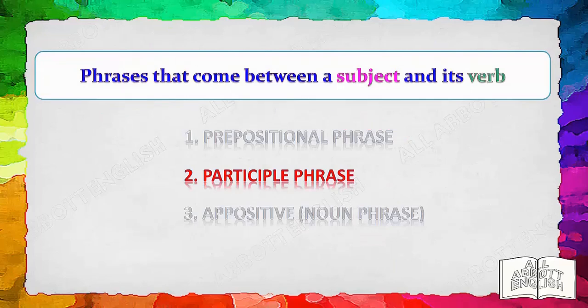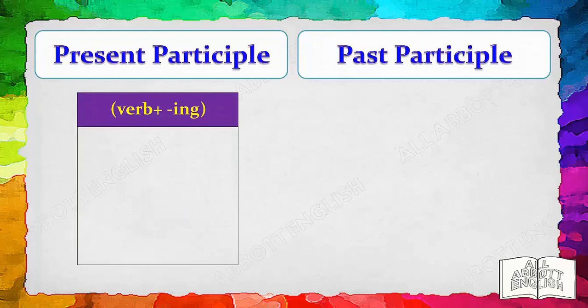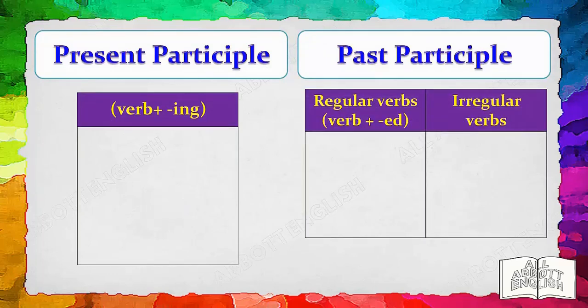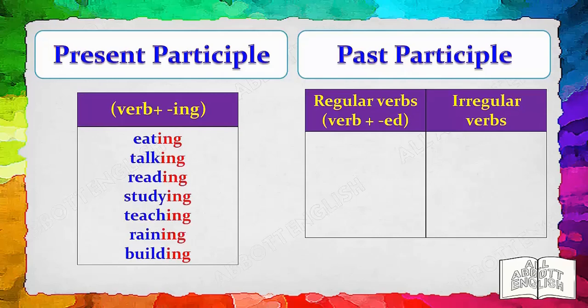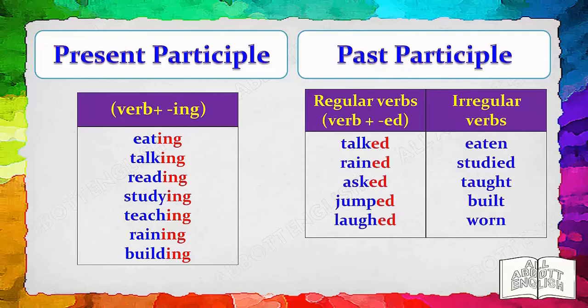Another group of words that often comes between a subject and a verb is the participle phrase. It consists of a present participle — ending in -ing — or a past participle. Regular past participles end in -ED; irregular past participles end in several ways. Examples of present participles: eating, talking, reading, studying, teaching, reigning, building. Past participles — regular: talked, reigned, asked, jumped, laughed. Irregular: eaten, studied, taught, built, worn.